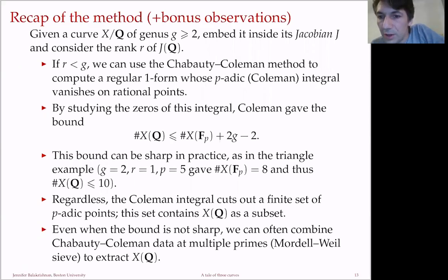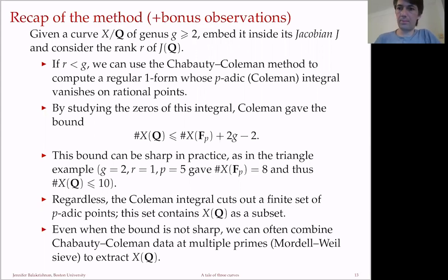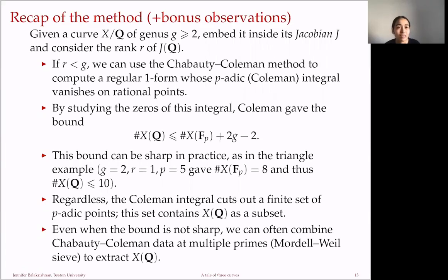A question from the audience: in Coleman's bound, is |X(𝔽_p)| for a specific p or for all p? This is the p that you choose. It has to be a prime of good reduction and larger than 2 times the genus, and the bound holds for any such p—you get to pick.